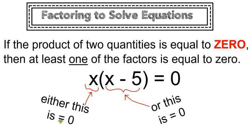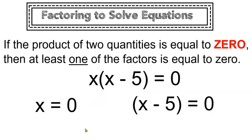And if that's the case, then I can split this into two separate statements. The first statement would be that the first factor is equal to 0, and the second statement would be that the second factor is equal to 0.